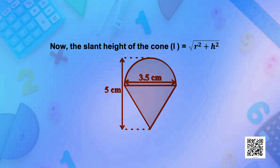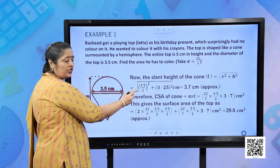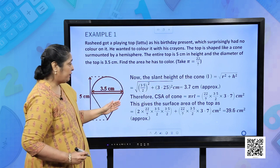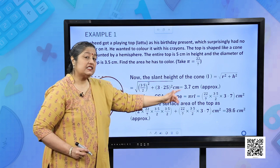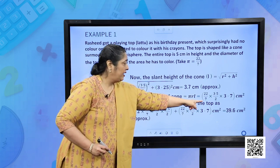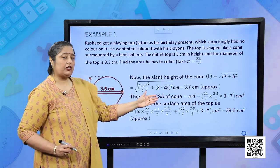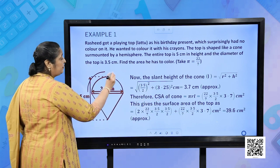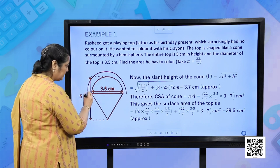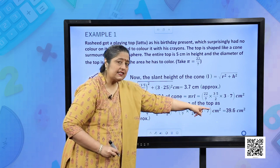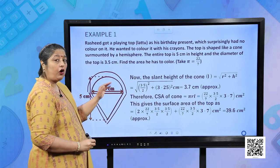The slant height of the cone is given by L = √(R² + H²). Substituting the values of R and H, we get L = 3.7 centimetres. The curved surface area of the cone is πRL. Substituting the values of π, R, and L, and adding the CSA of the hemisphere and cone, the total surface area of the top is 39.6 cm².